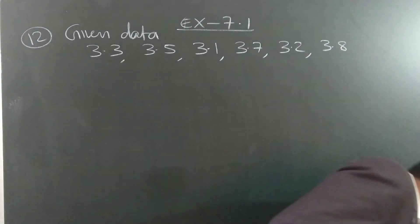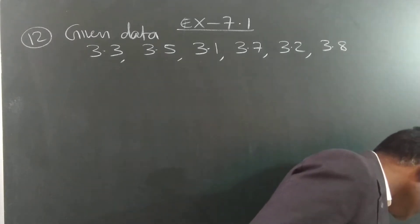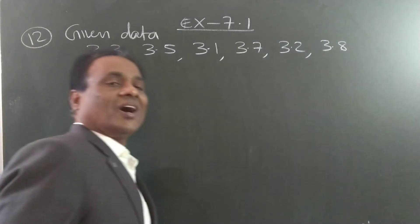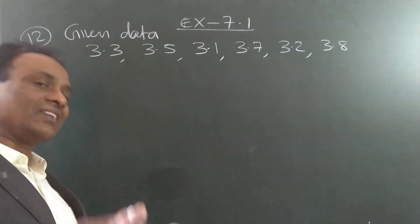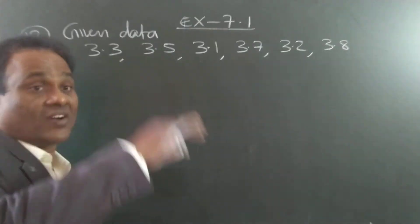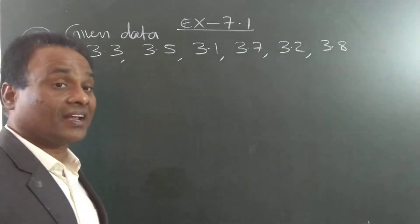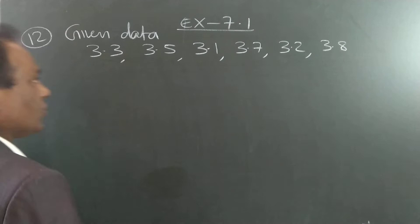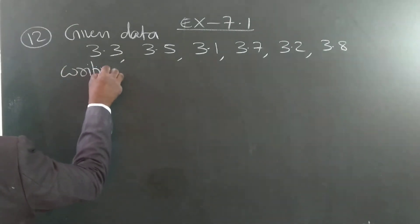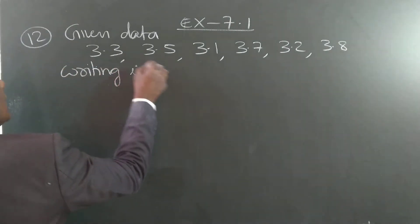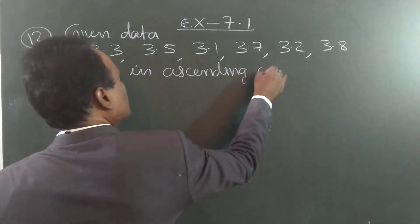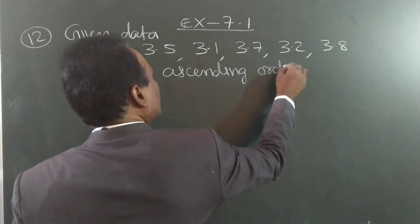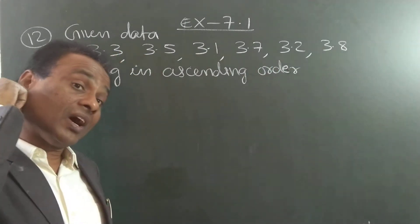How many numbers are given? 1, 2, 3, 4, 5, 6 — six numbers. Find the median. When six numbers are given, how do we find the median? Yesterday I explained the idea and gave all related definitions. First, we have to write in ascending order.